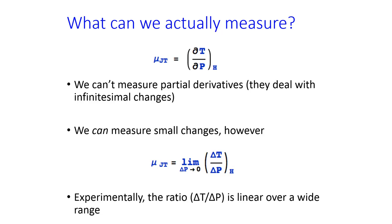We're actually going to measure the Joule-Thompson coefficient, but we can't measure a partial derivative because, by definition, a partial derivative is an infinitesimally small change. We can't measure that. What we can measure is a relatively small change, changing the d in the partial derivative to a delta in the equation below.